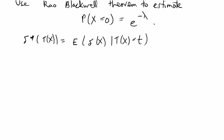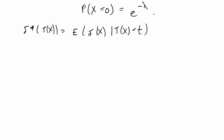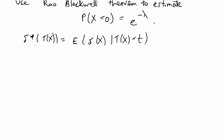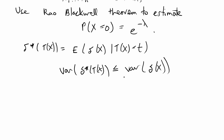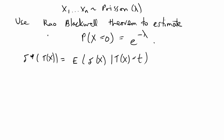The Rao-Blackwell estimator is better because of two properties it has. The first property is that it's considered a minimum variance estimator. The variance of delta star t(x) is always going to be less than or equal to the variance of delta of x. So whatever estimator you start with, the one you end up with will always have at least as small a variance as you started with, or often less.